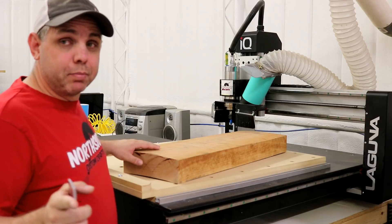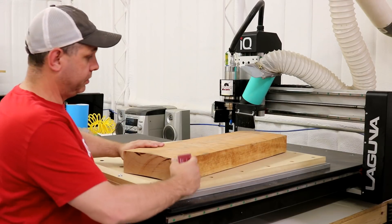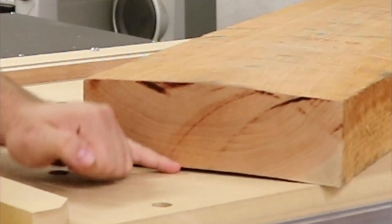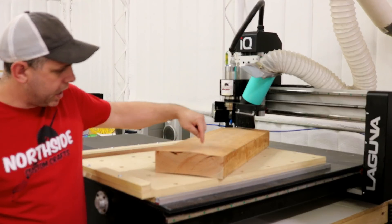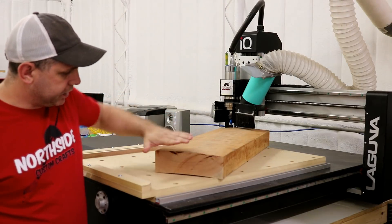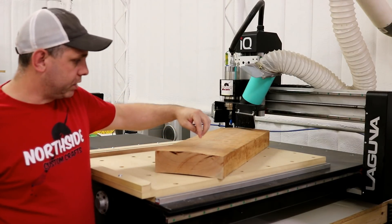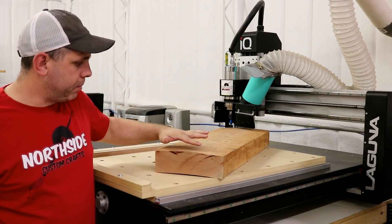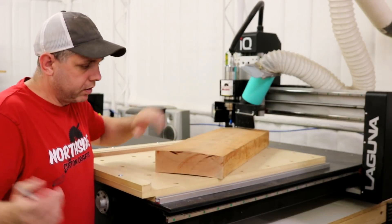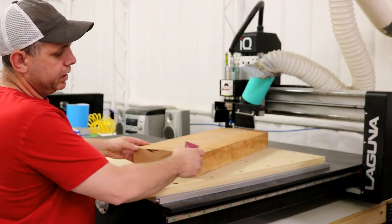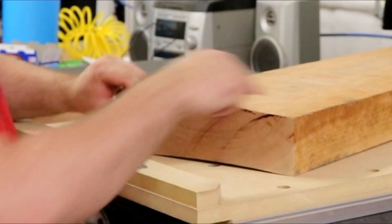Now the problems that this board has is one it's cupped. If you look right here there's a big gap in there which means in the center of this on the top is higher than the edges. That's okay because we'll just set our depth for our bit at the highest point and go from there. If we have to make several passes we have to make several passes. The other thing wrong with this is it's warped.